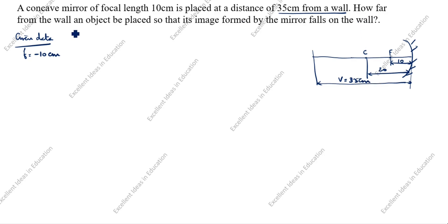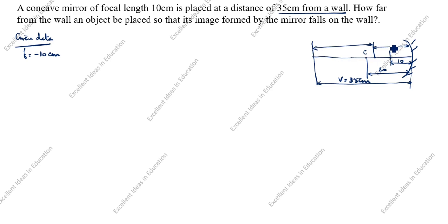The question asks: how far from the wall should an object be placed so that its image formed by the mirror falls on the wall? So now we will calculate this distance — we don't know this value. This is u, and we need to find it. v is minus 35 centimeter because this side is always negative.